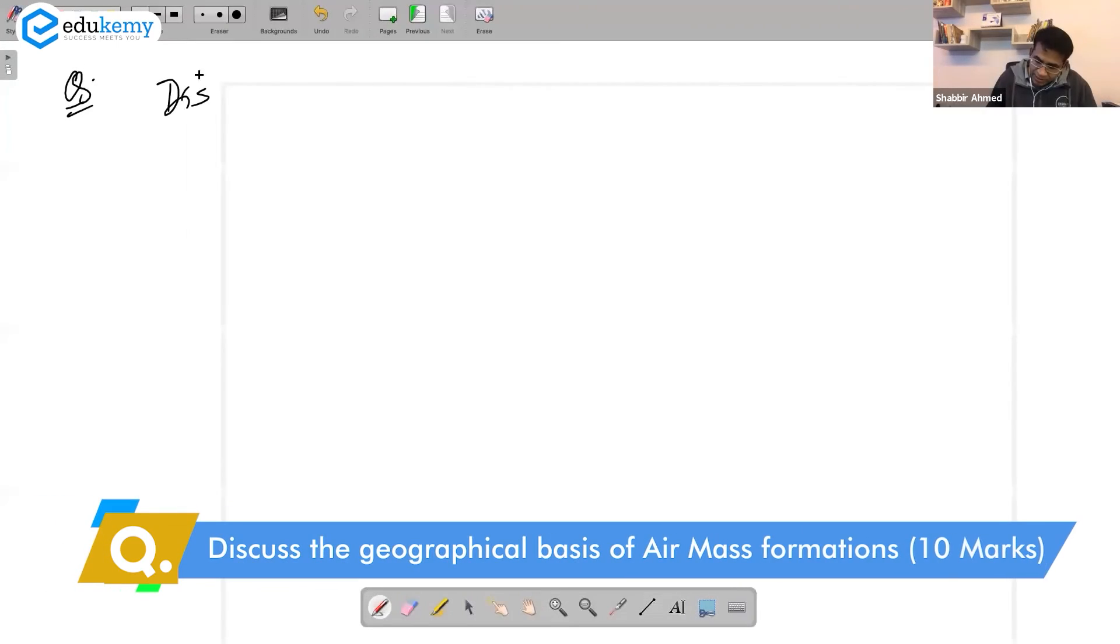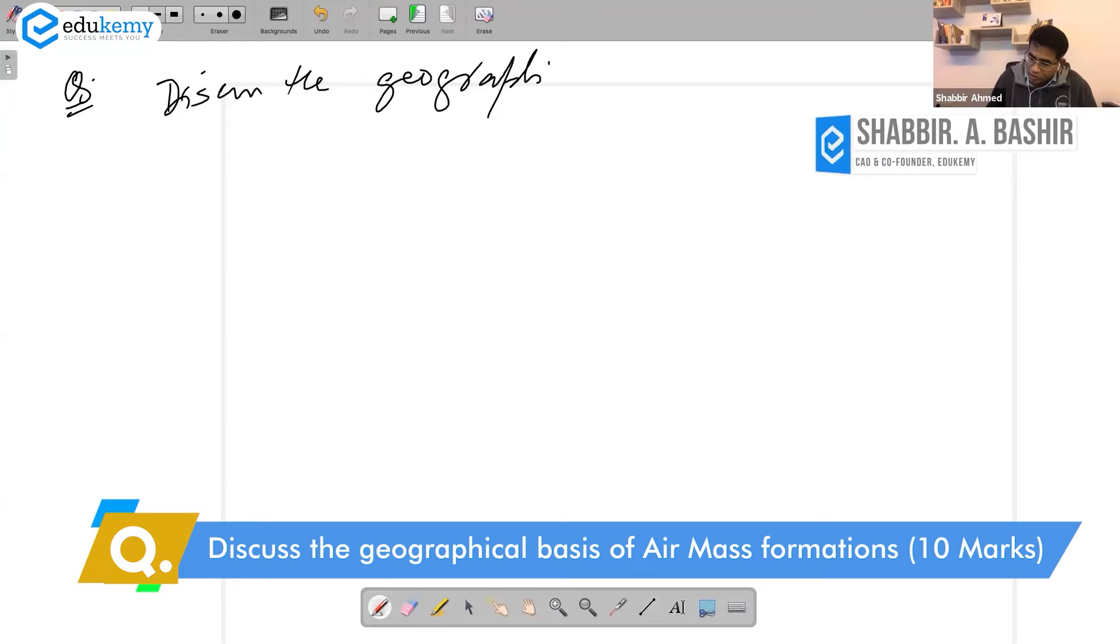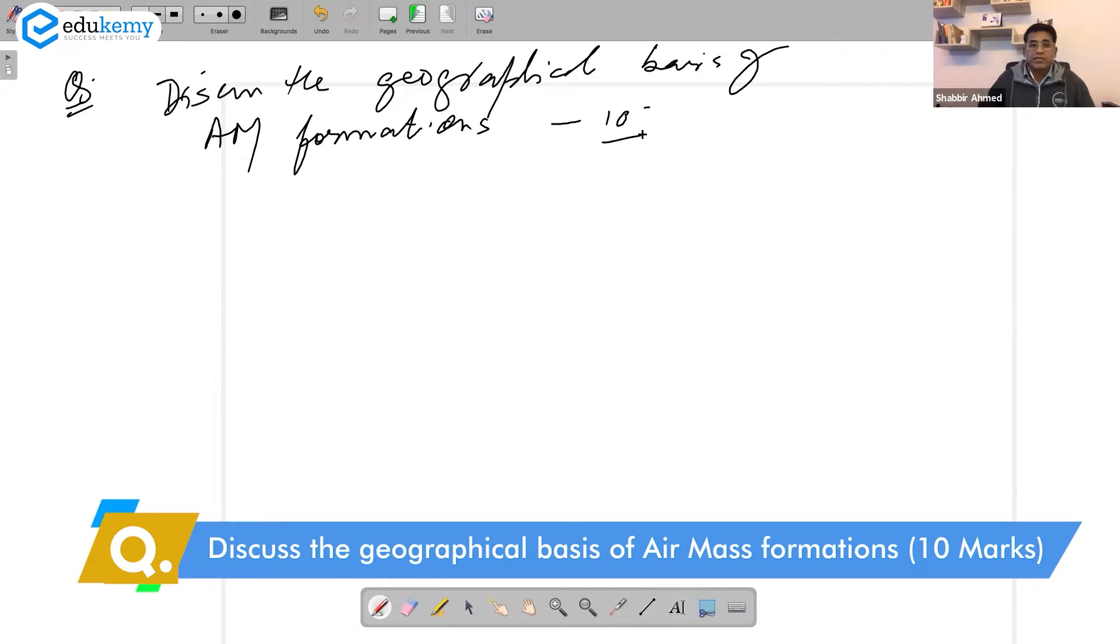Discuss the geographical basis of air mass formations, 10 marks. Now tell me broadly, let's talk that way. I am asking you about the source regions, land shapes, water shapes. So it will be like this - discuss geographical basis. I would just divide the answer into three parts.